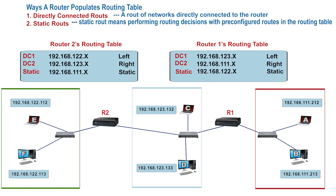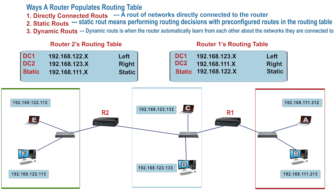Third, another method for a router to determine its routes is by dynamic routes. Dynamic routes means the router automatically learns from other routers about the networks they are connected to. For example, we can configure both routers to learn from each other. If router 1 receives a packet with a destination IP it does not know, it will forward that packet automatically to the next router, which is router 2. This method is made possible by protocols called dynamic routing protocols.